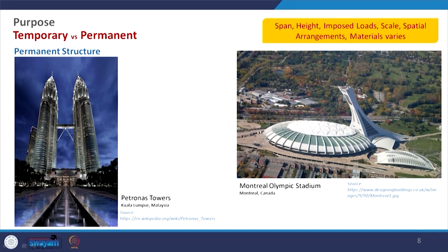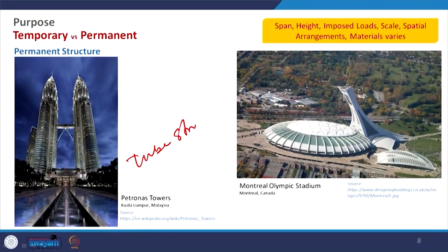Here you can see the Petronas Tower, which is a commercial and business-type building requiring a different kind of structure — here it was used as a tube structure, which we will come to when we discuss high-rise buildings. Basically, we create the form in a tubular form with extensive use of steel. That is also true for the stadium, where you have to cover a very large span, so our structural decision will change from what we normally use for residential buildings.